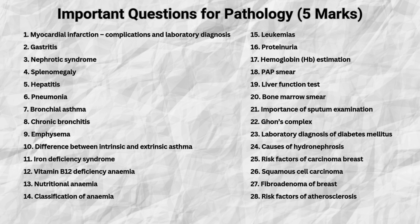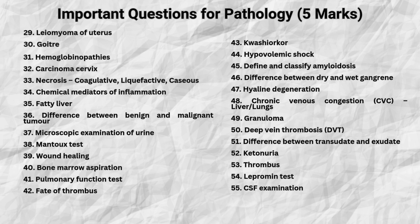Don't forget sputum exam, Ghon's complex, hydronephrosis, carcinomas, goitre, leiomyoma and hemoglobinopathies. Additional must-know short notes include types of necrosis, chemical mediators of inflammation, fatty liver, differences between benign and malignant tumours, and tests like the Mantoux, lepromin and CSF exam. Also cover wound healing, kwashiorkor, amyloidosis, shock, hyaline degeneration, DVT and more.